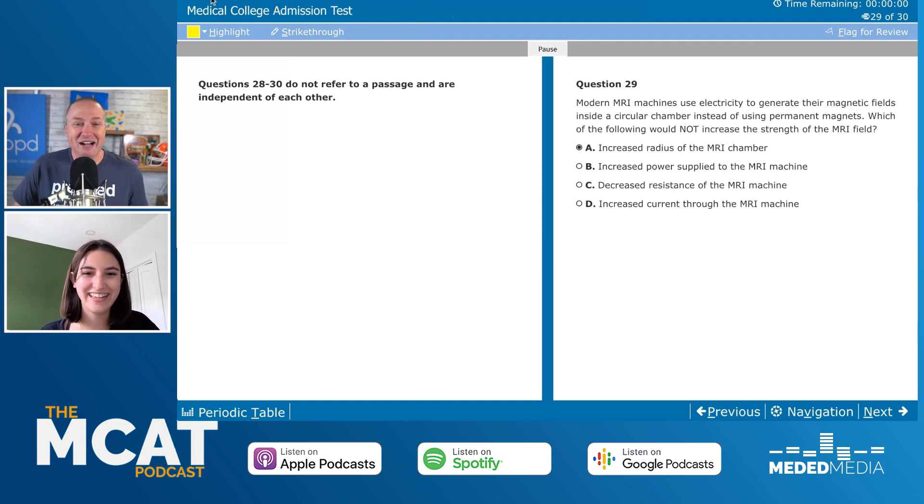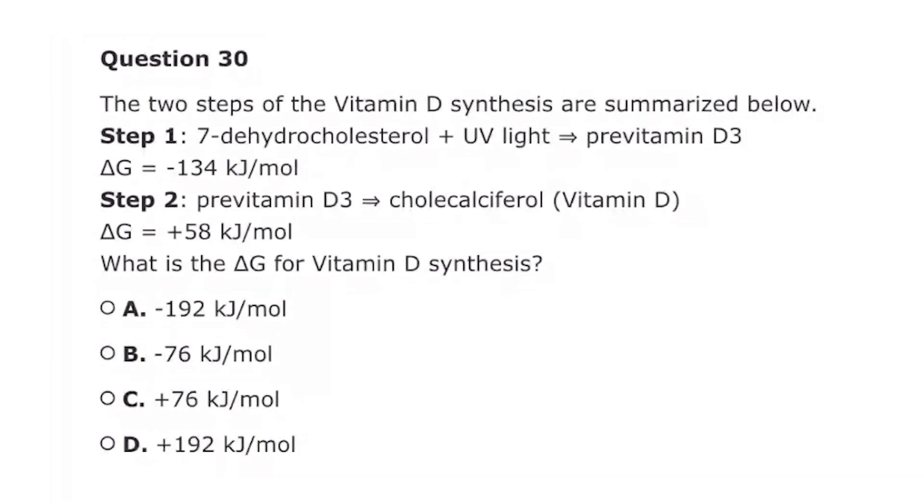All right. Got one. I finally got one right. Although this one, as soon as we flip to it, I go, Oh, I'm definitely not doing well here. Question 30, the two steps of the vitamin D synthesis are summarized below. It seems like the vitamin D synthesis, like there should be no the there. It was a little typo anyway, step one, seven D hydrocholesterol plus UV lights. It leads to pre vitamin D three with a Delta G of negative 134 kilojoules per mole. And then step two pre vitamin D three, which leads to colcalciferol, vitamin D with a Delta G of 58 kilojoules per mole. What is the Delta G for vitamin D synthesis?